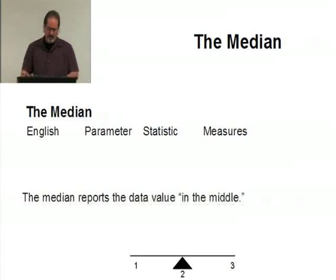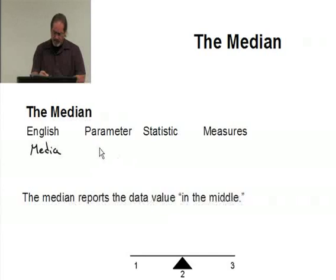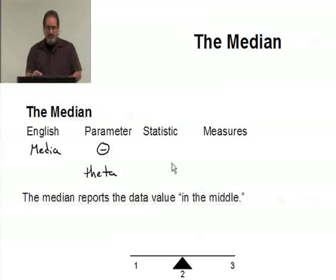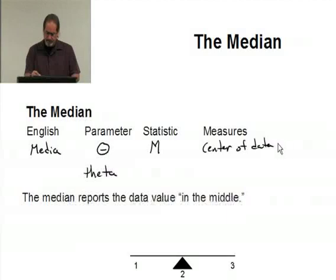In English we talk about the median. Let's take a look at this parameter statistic thing again. The parameter is a Greek letter theta, a circle with a dash through it, like T-H-E-T-A theta. The statistic is a capital letter M, and it measures the center of data. Specifically, it's the physical center.